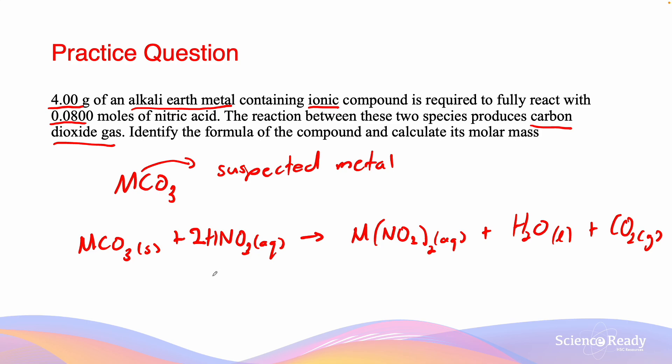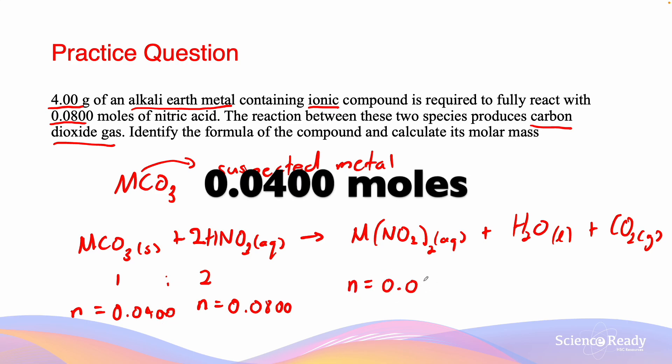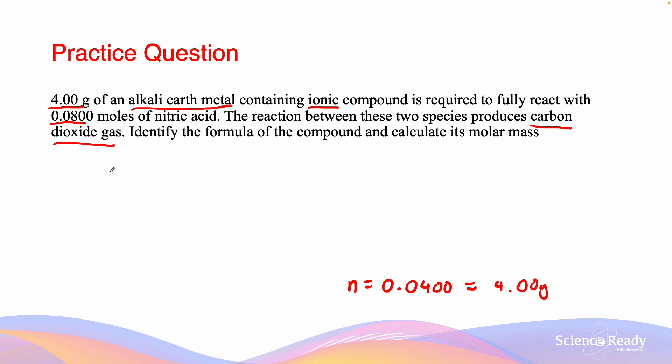From the equation, the ratio of carbonate compound to nitric acid is 1 to 2. Since the number of moles of nitric acid required equals 0.0800, the number of moles of this carbonate must equal half of this, which is 0.0400. Since 0.0400 moles equals 4.00 grams, the molar mass equals 4.00 divided by 0.0400, and that equals 100 grams per mole.